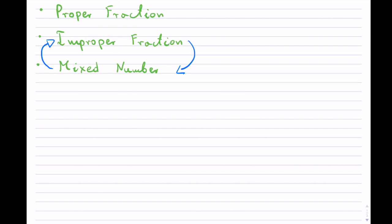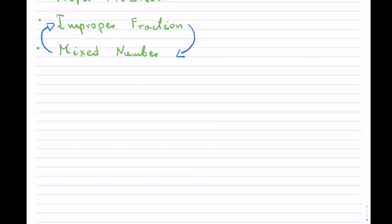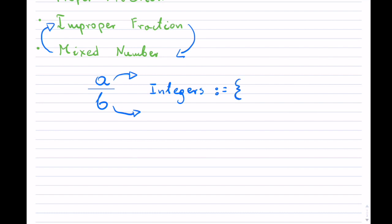Now, a fraction in general is written in the format A over B. We know that A, the numerator, which is on top, and B, the denominator, which is at the bottom, they must be integers. And for those who have forgotten, integers can be negative, positive, or the number zero.